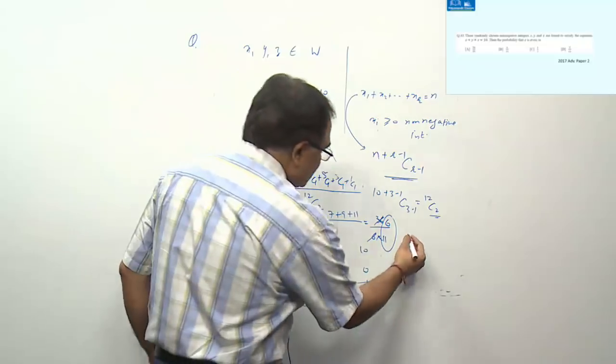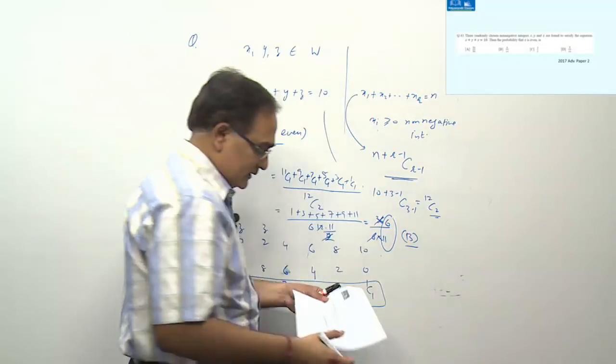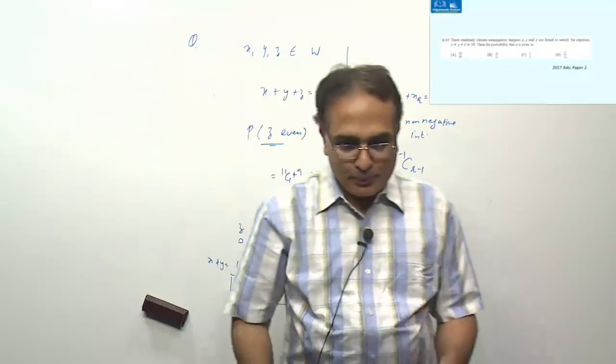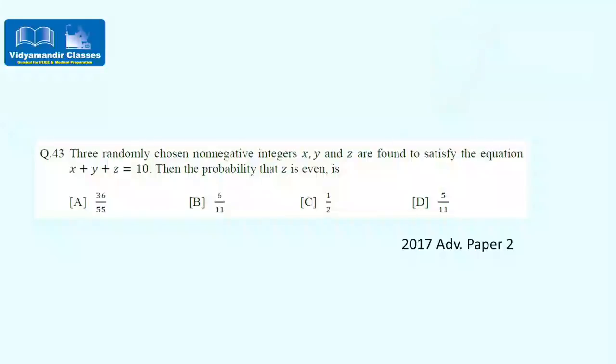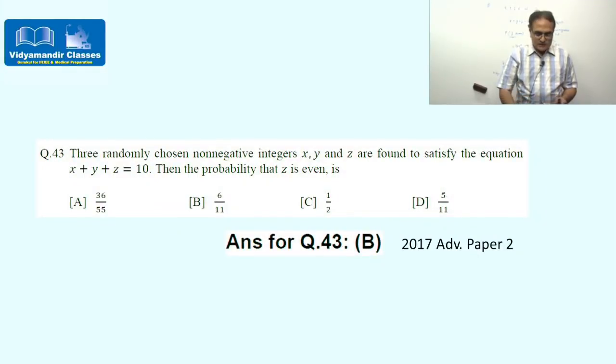The required probability is 36/66 = 6/11. The answer is option B, which is the official answer key.